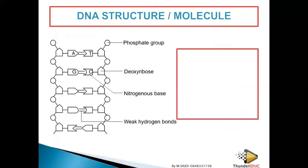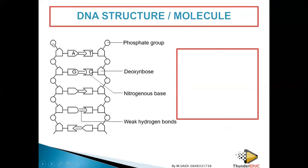Looking at the diagram of the DNA molecule: DNA is a double-stranded molecule. Each nucleotide is made up of a phosphate, a sugar, and a nitrogenous base. These nucleotides are joined together by sugar-phosphate bonds to form a strand. The four bases are adenine, thymine, guanine, and cytosine — adenine pairs with thymine, guanine with cytosine — and the two strands are linked together by weak hydrogen bonds.